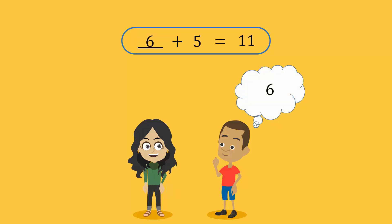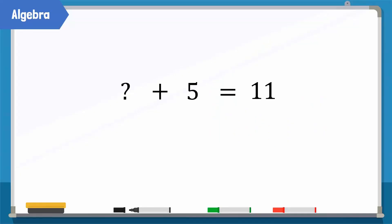Do you know how an unknown number is represented in mathematics? How do we represent the number we are asked to think of? It is very simple. The unknown number can be represented mathematically by the symbol delta. To understand how delta is used, let's see how Asif solved this question.